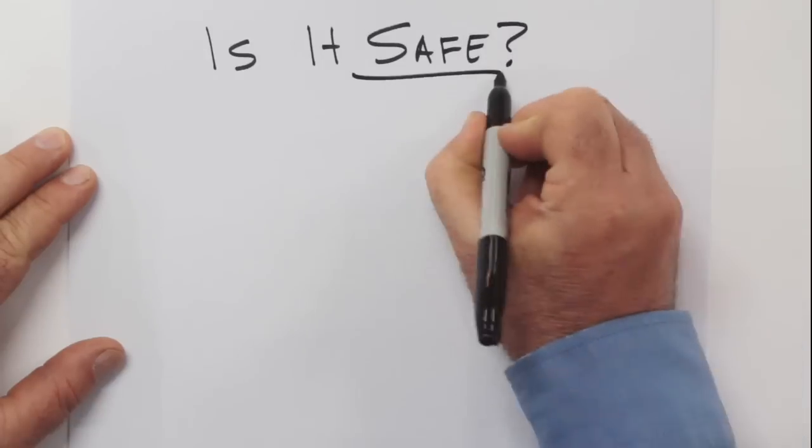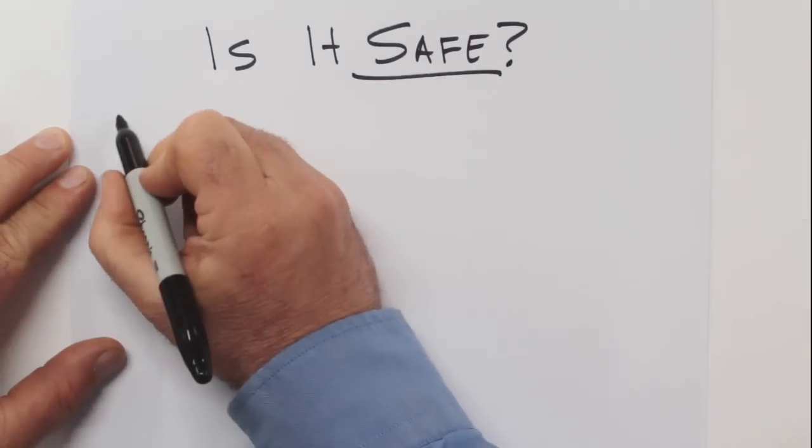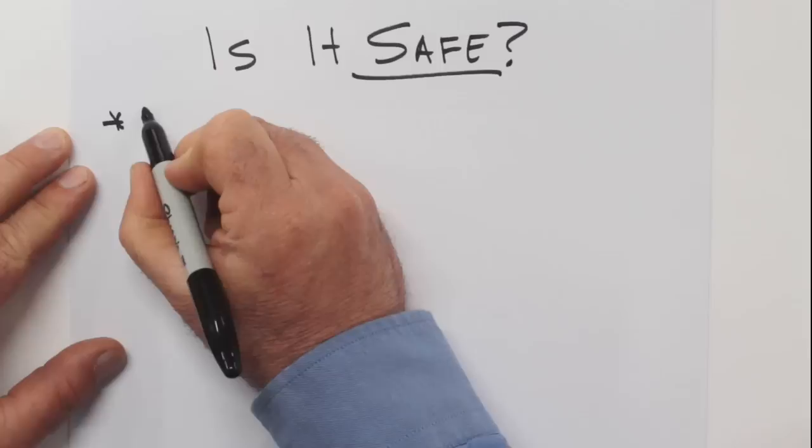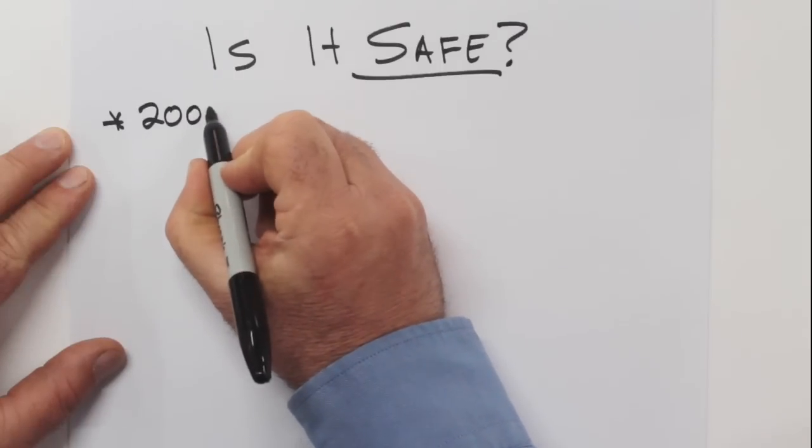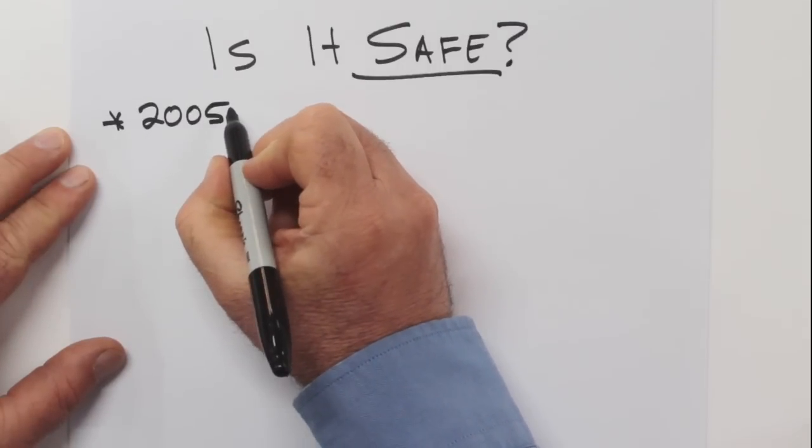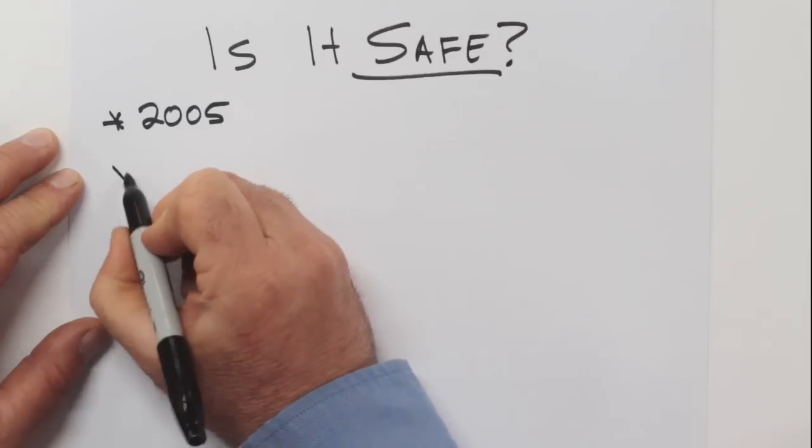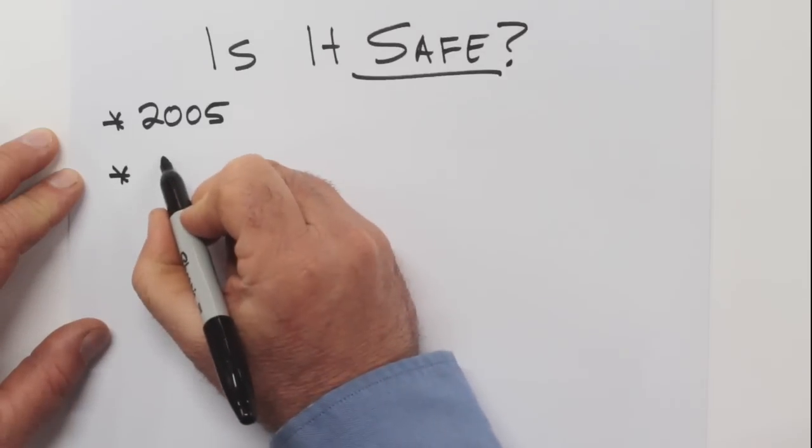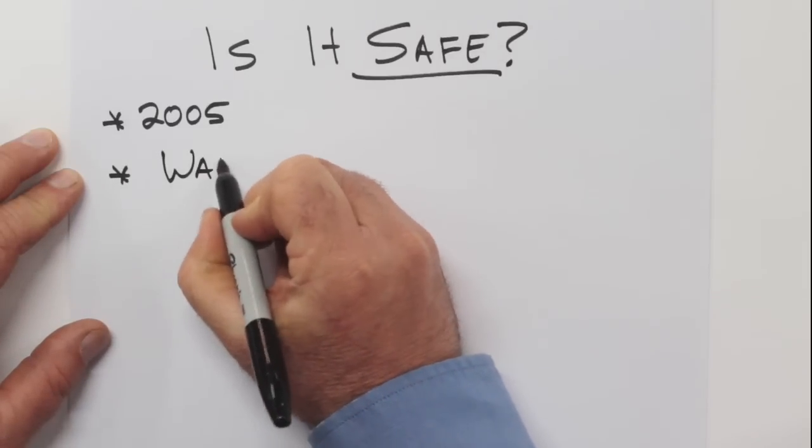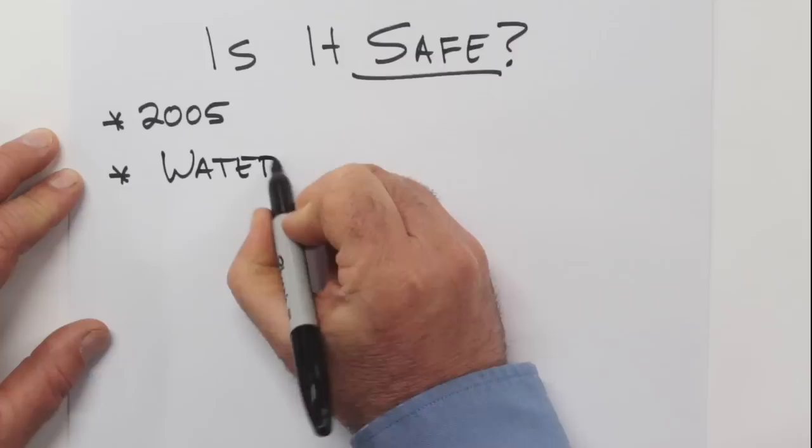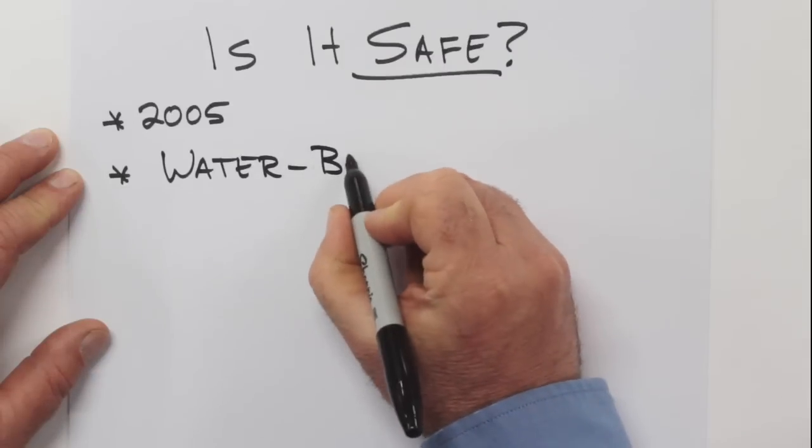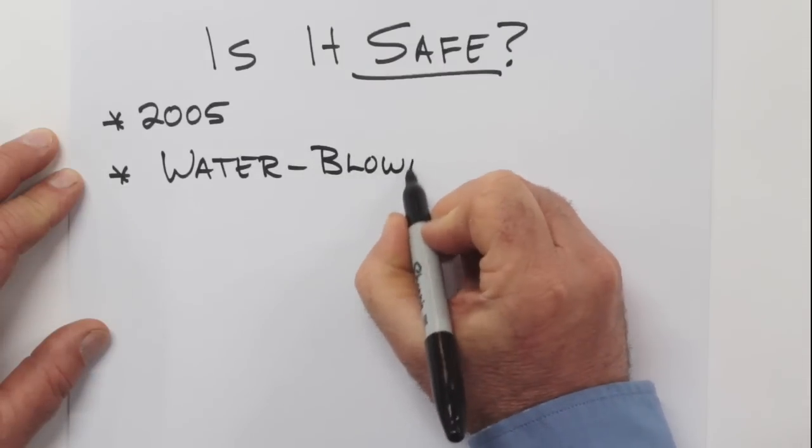I first saw spray foam insulation used in 1988 on a commercial project I was on. And in 2005, I specified it for one of my own projects. It involved my parents-in-law, and they were concerned about safety, so I recommended a water-blown product by a company called Isonene.